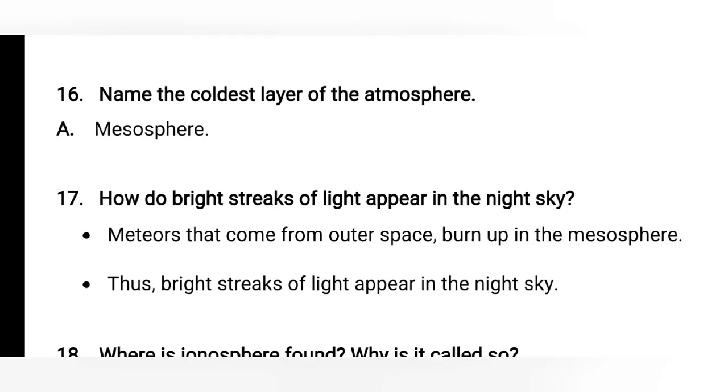When they burn and fall down, they appear like streaks of light. That's why it is given: meteors that come from outer space burn up in the mesosphere. Thus bright streaks of light appear in the night sky.